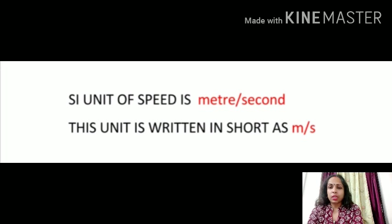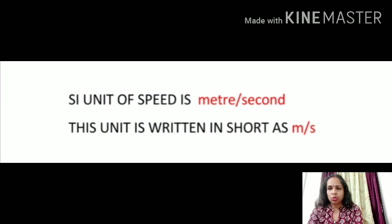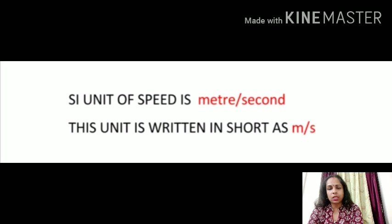Now, the unit of speed. In class 6 you studied that the SI unit for length is meter. Here, distance is also a type of length, so the unit for distance will also be meter. And the SI unit of time is second. So, the SI unit of speed becomes meter per second. It could also be expressed as meter per minute or kilometer per hour. If we take distance in meter and time in minute, the unit of speed becomes meter per minute. And if we take distance in kilometer and time in hour, the unit of speed becomes kilometer per hour.